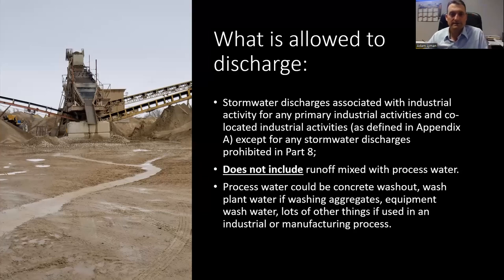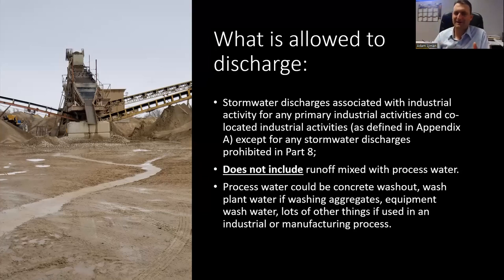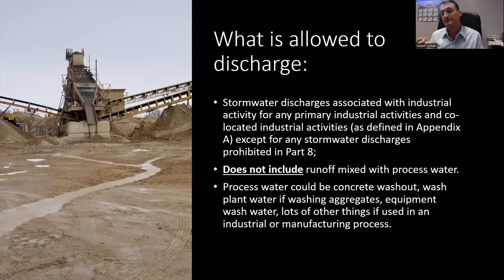What's allowed to discharge from a multi-sector general permit includes stormwater discharges associated with industrial activity for any primary and co-located industrial activities. For example, I worked on one that had a landfill, and inside the landfill there was a gravel mining operation — those would be two co-located activities. You'd have to write your stormwater plan to address requirements for both activities.